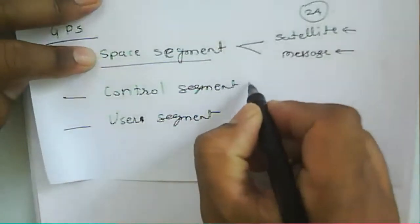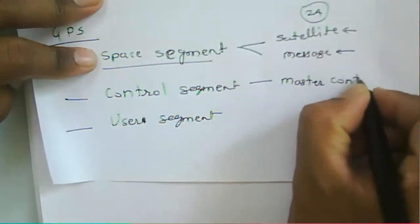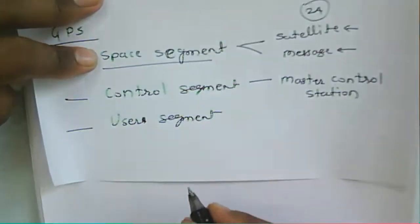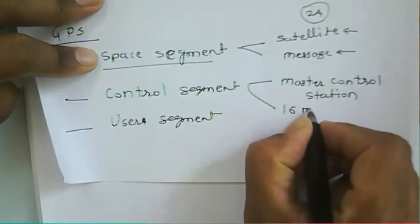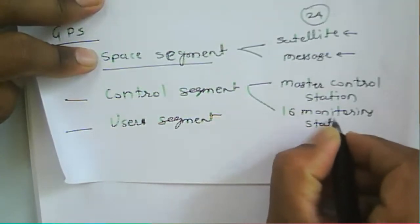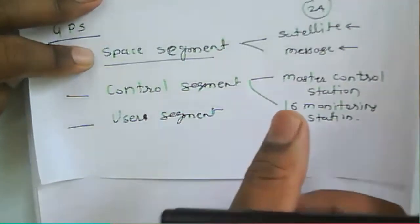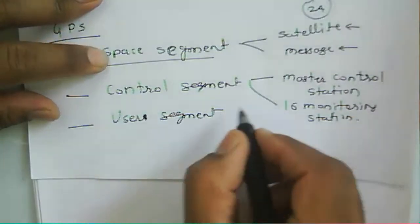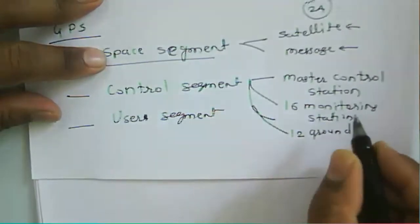The control segment has a master control station. Along with the master control station, it has 16 monitoring stations located throughout the world, and it has 12 ground antennas.